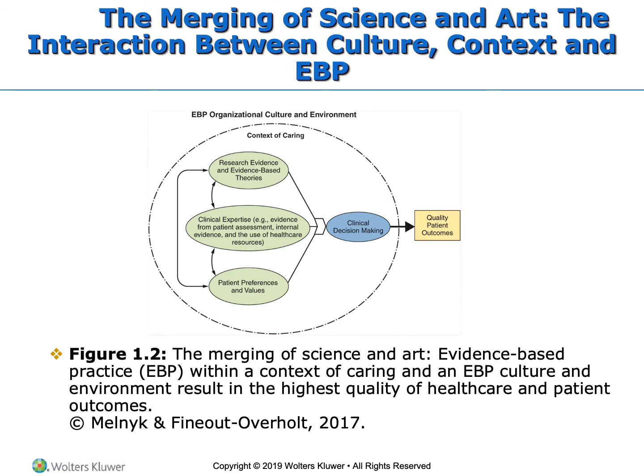This chart, titled EBP Organizational Culture and Environment, talks about the context of caring. It goes back to those three pillars — utilizing EBP, clinical expertise, and patient preferences and values to make a clinical decision, ultimately improving patient outcomes and quality. Really, it's both a science and an art to develop the best clinical decision-making tool to improve quality outcomes.